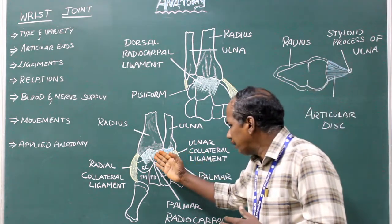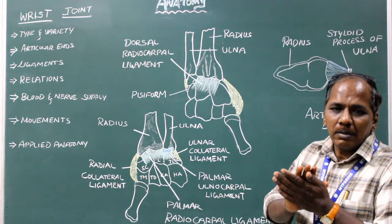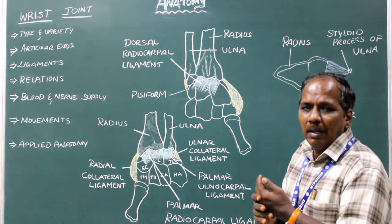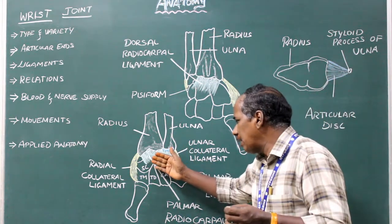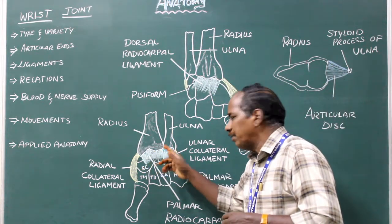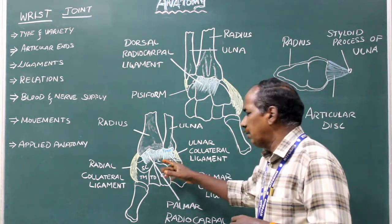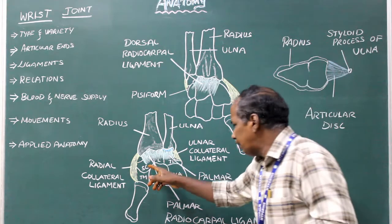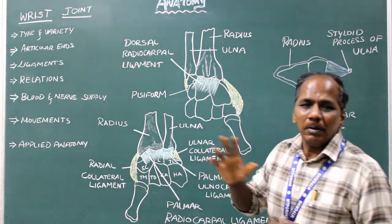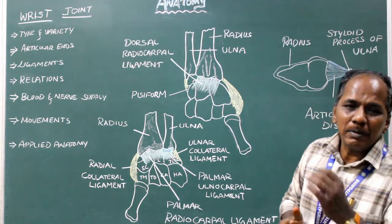The palmar radiocarpal ligament and the dorsal radiocarpal ligament have similar attachments — easy to remember. The only difference is the palmar is on the anterior aspect and the dorsal is on the posterior aspect. Palmar: anterior margin of lower end of radius to anterior surface of scaphoid, lunate, triquetral. Dorsal: posterior margin of lower end of radius to posterior surface of scaphoid, lunate, triquetral.